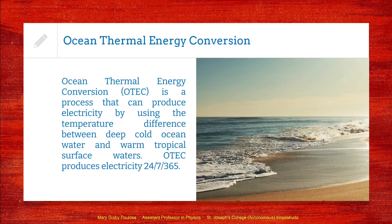The next type of non-conventional energy source is ocean thermal energy conversion, OTEC. Here electricity is generated by making use of the temperature difference within the ocean itself. Between the surface of the ocean and the deep depth of the ocean, there can be a temperature difference of around 25 to 28 degrees Celsius, and by making use of this temperature difference we can generate electricity. This form of energy is available every day throughout the year — it does not depend on whether it is day or night. The source is always available, making it a continuously available renewable energy resource.